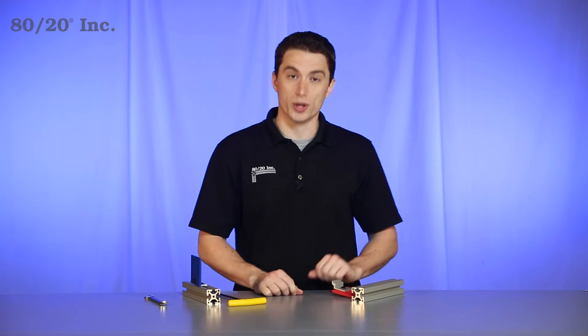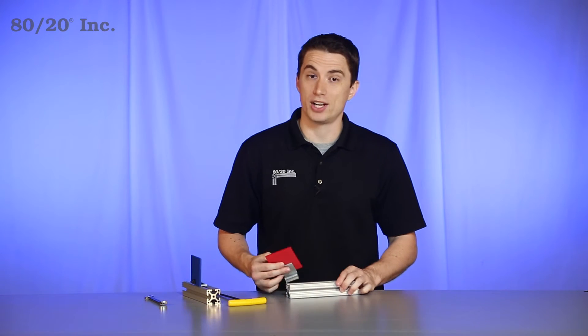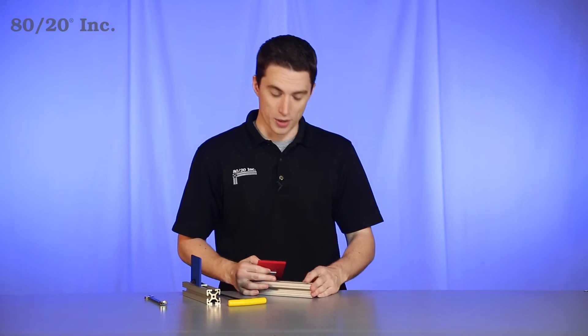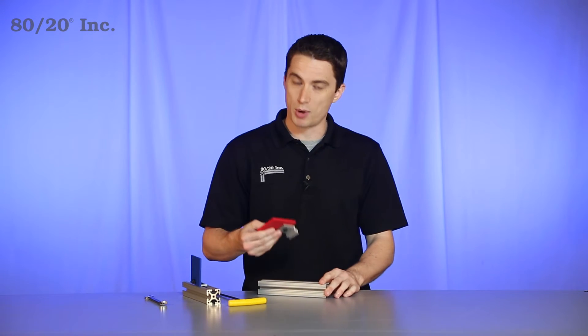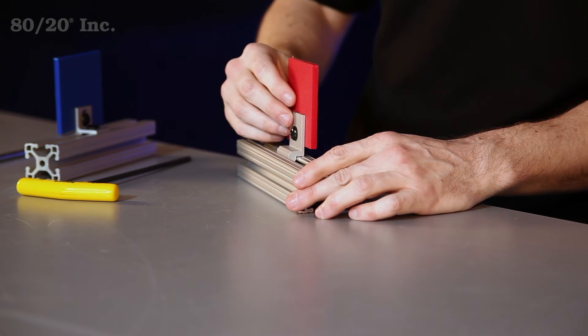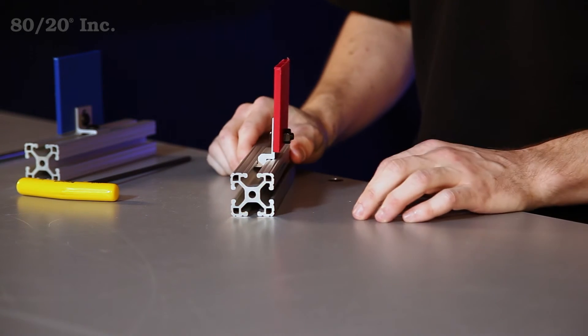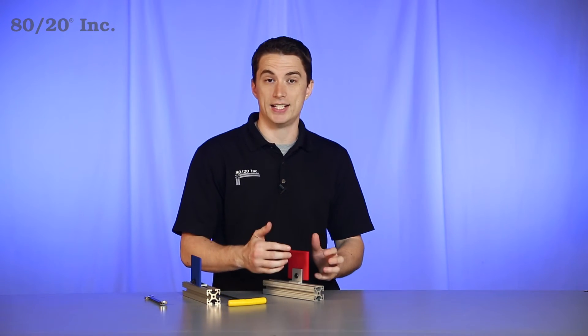Another option you have is a roll-in bracket. This is perfect for adding on to existing projects where the end of the profile may be closed off. You simply take the bracket and roll it into the open T-slot. From there, you just take a bolt and a hex nut and tighten down your panel.